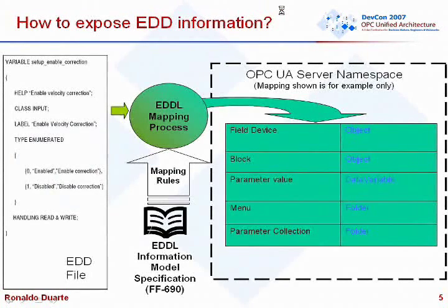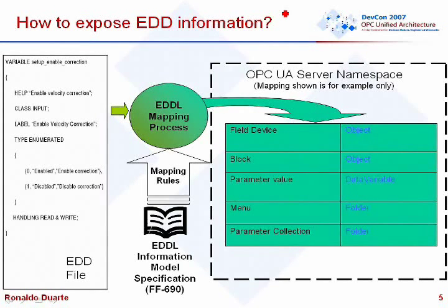After locating the EDD on the hard disk of the computer, we perform the mapping process defined by the EDD information model that Nestor described. This specification defines mappings between what needs to be extracted from the EDD and what information goes into the OPC UA nodes. For instance, the information model says: whenever you find a field device, create an object, instantiate it, and fill its attributes with information from the EDD.